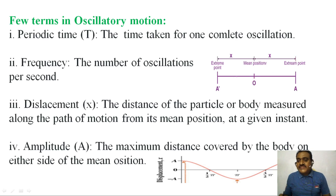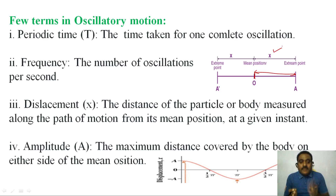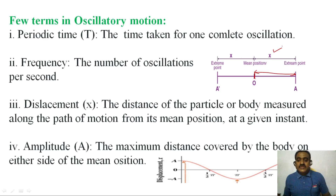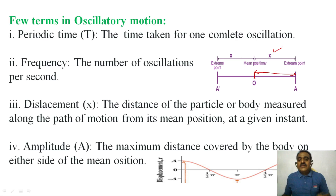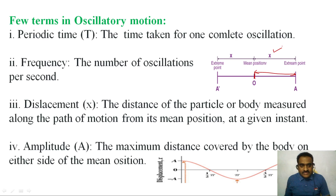What is displacement? From the mean position or equilibrium position to the extreme point — that distance is displacement. The definition: the distance of the particle or body measured along the path of motion from its mean position at a given instant is called displacement. It is represented by x, and it is the distance between the mean position O and the extreme position A.